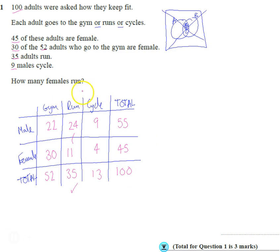Once we've got that information, how many females run? Well, 11. Done.